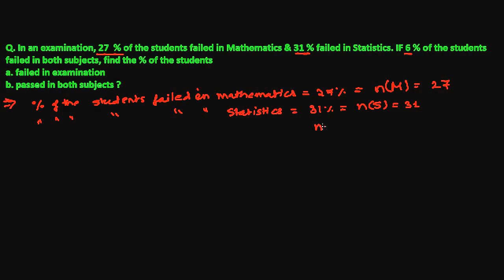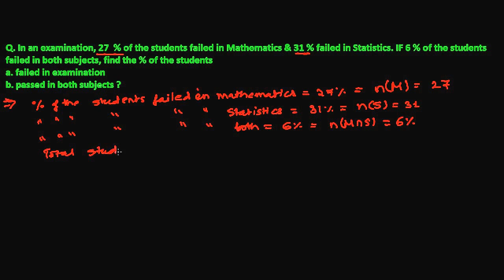So both — that is N failed in both subjects. Percentage of the students failed in both subjects, N(M∩S) equals 6%. And the rest of the students will be passed, so total students is always 100%. N(U) equals 100.